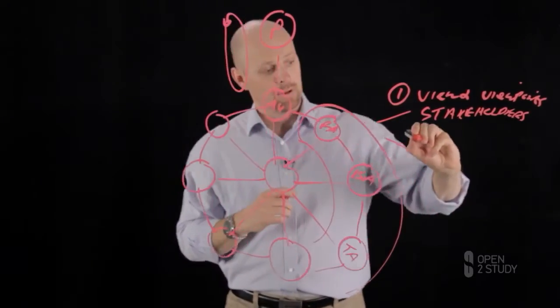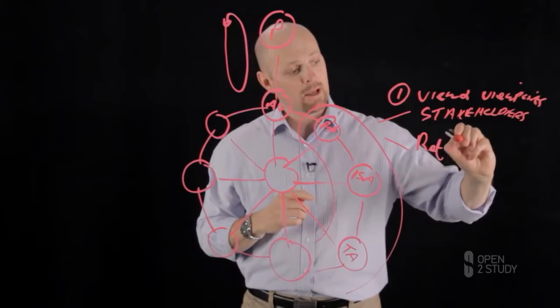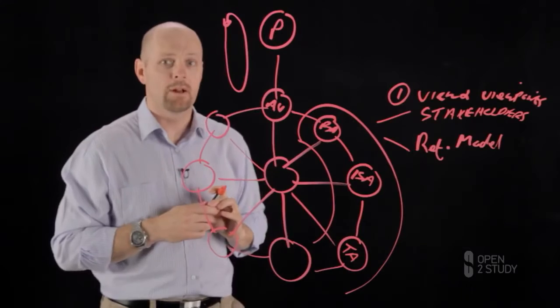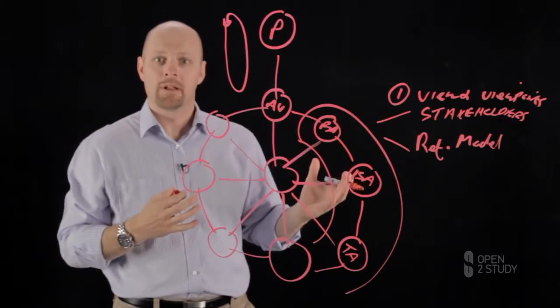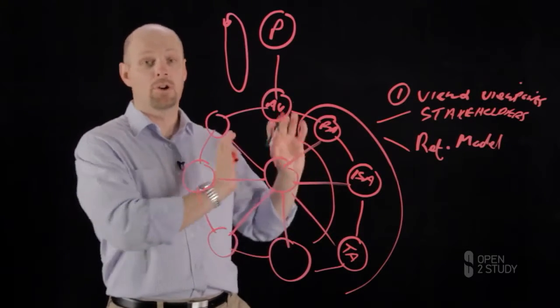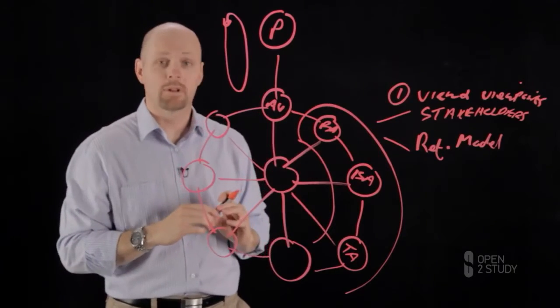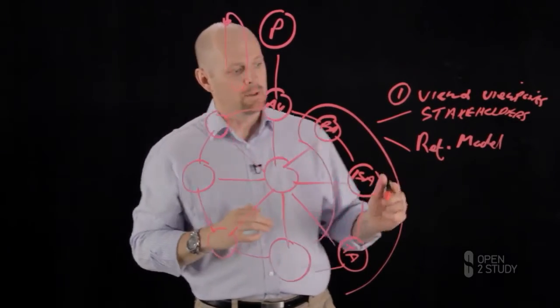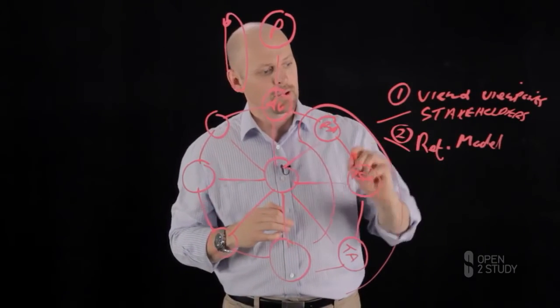Secondly, you then want to look at reference models. So we've introduced reference models and now you want to see in order to address those concerns of the stakeholder, are there any reference models available that I can already use and consume? And if they're documented according to the viewpoint description, it actually makes it quite easy to locate them. That's what speaks to the value of building a standard model across an organization.